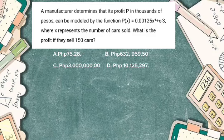First, we just have to substitute the value of x as 150, since x represents the number of cars sold. So our solution will be P(150) = 0.00125 times 150 raised to the fourth power, plus 150 minus 3.